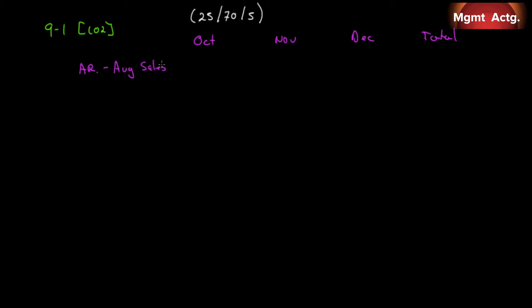August sales were $70,000, and we collect 5% in the second month after the month of sale, which means we will collect $3,500 in October related to August sales. For September sales: 25% were collected in September, 70% will be collected in October. September sales were $180,000, so $126,000 will be collected in October, with 5% — or $9,000 — being collected in November.